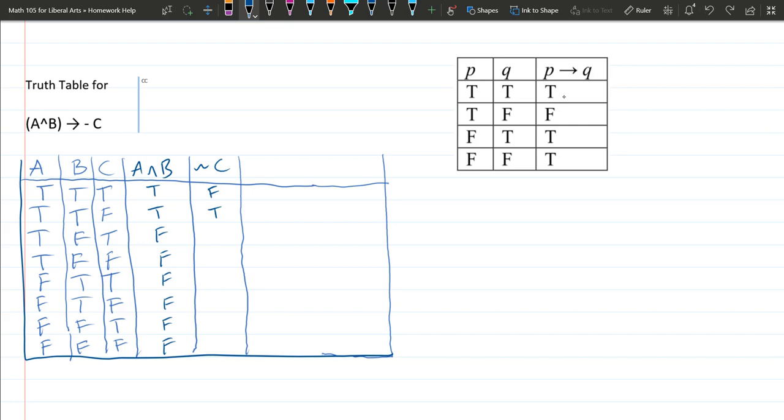Now we have true, so the opposite is false. False, true, true. False, false, true, true. False, last one, false, true. So it's just exactly the opposite of what you see on that column right there.